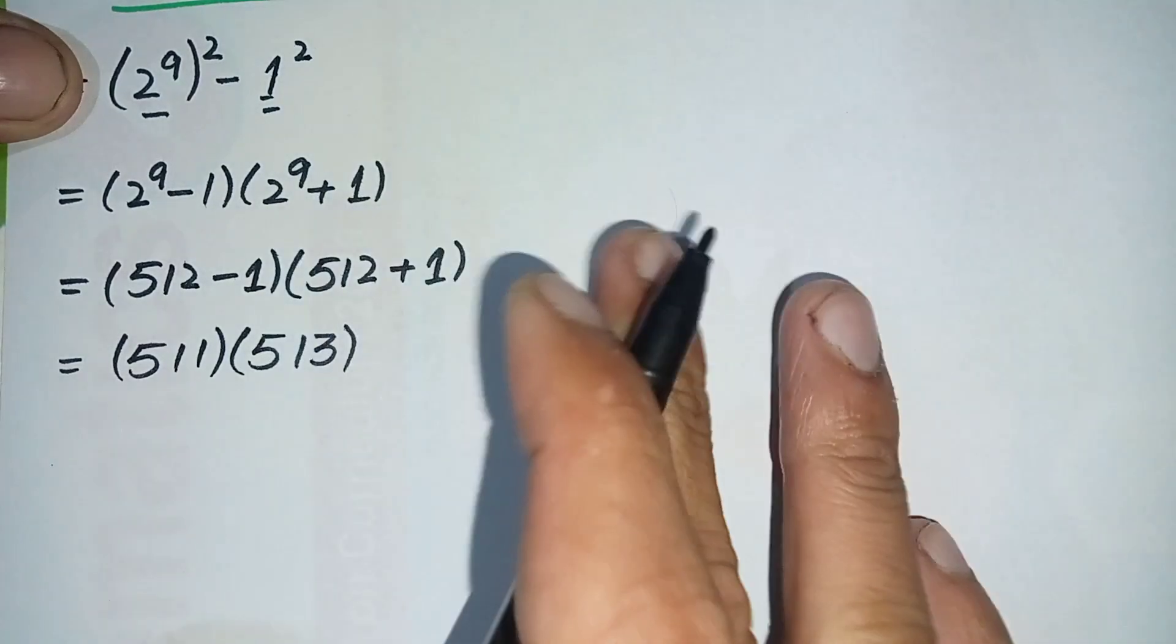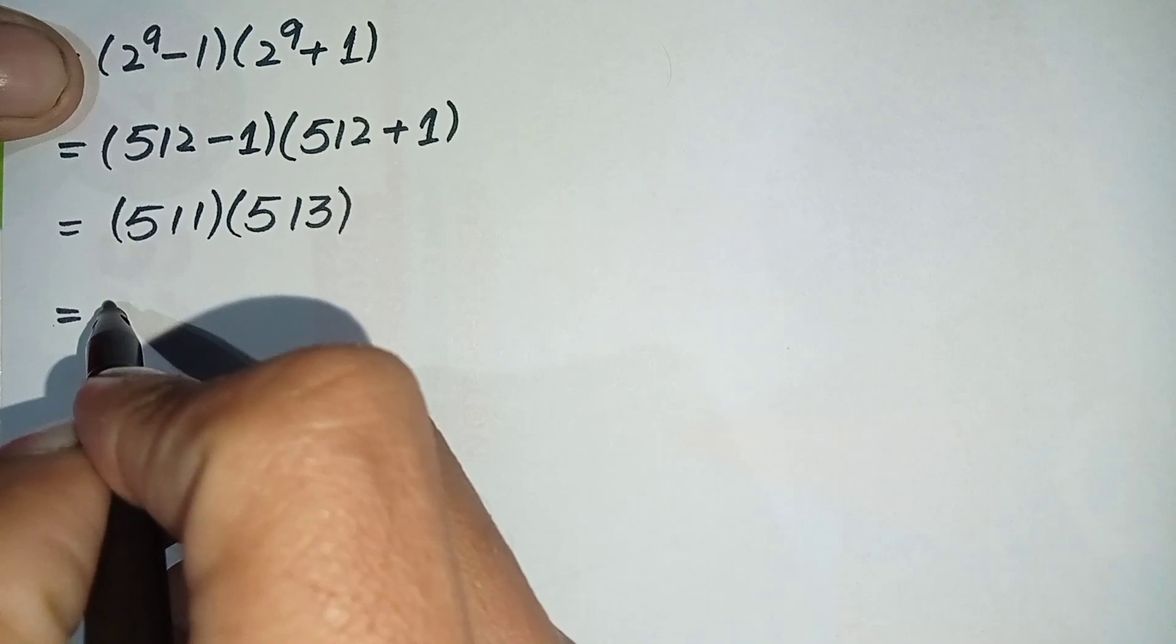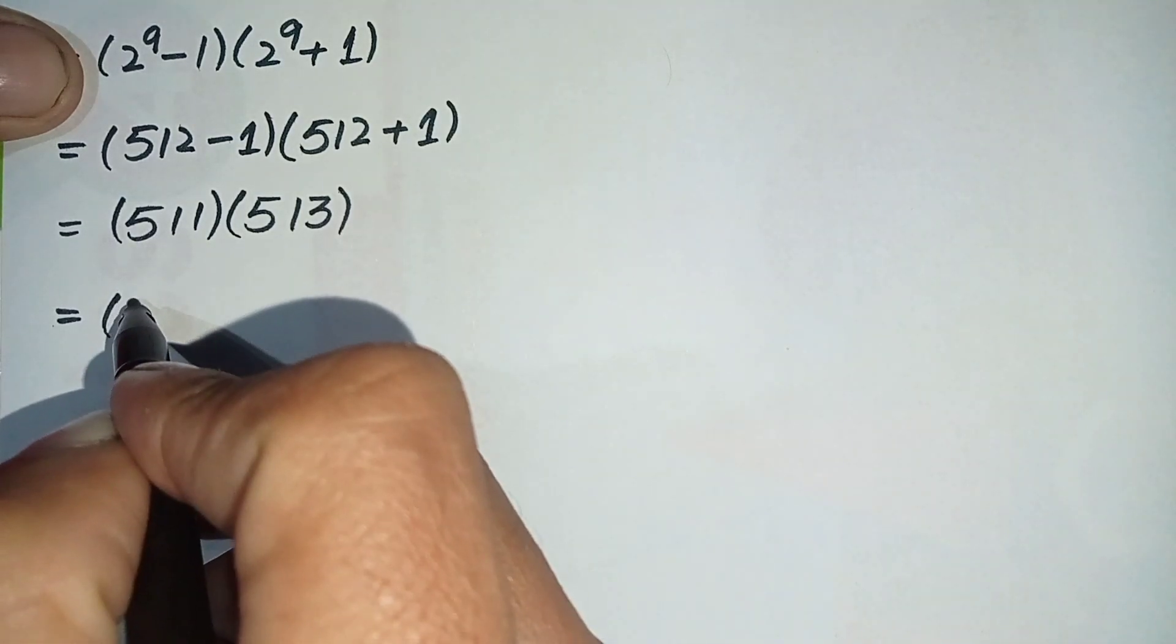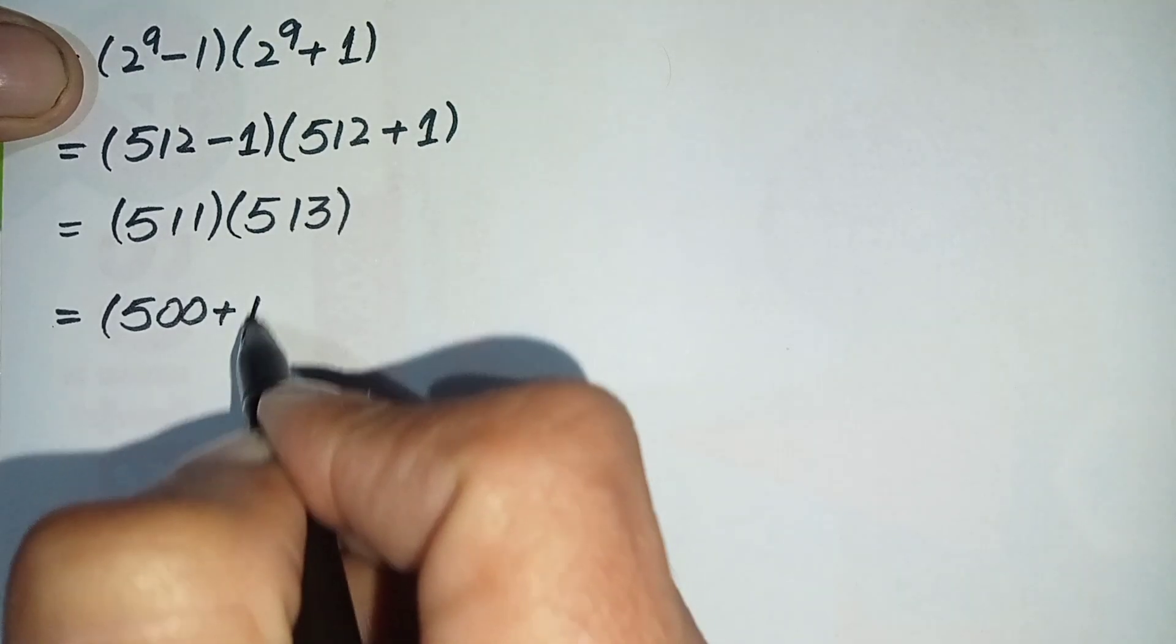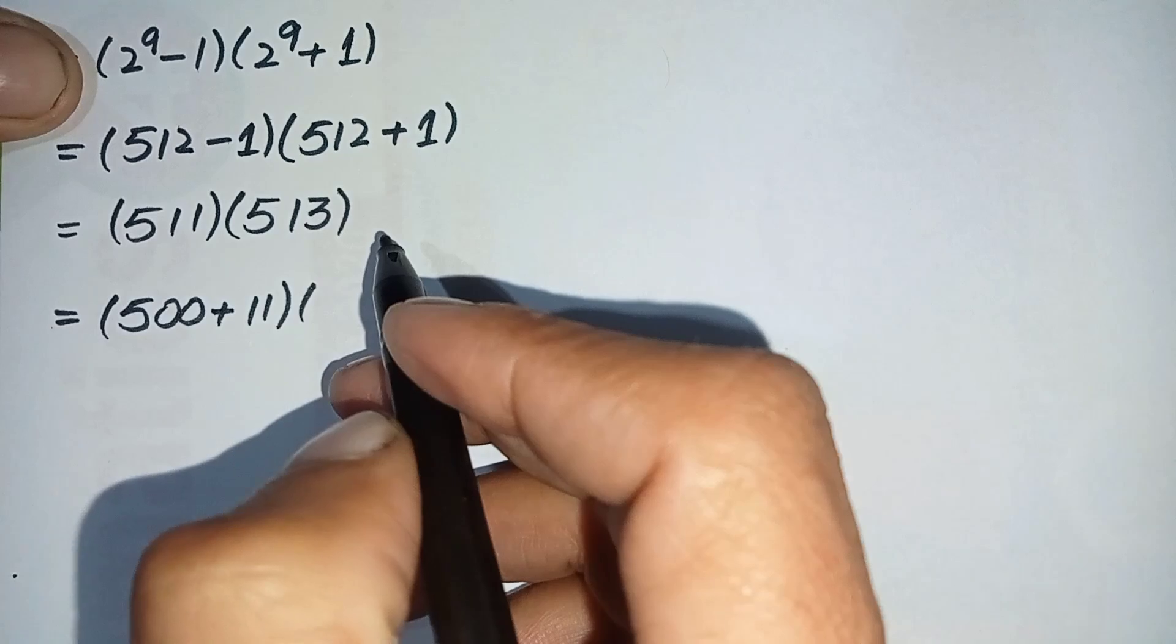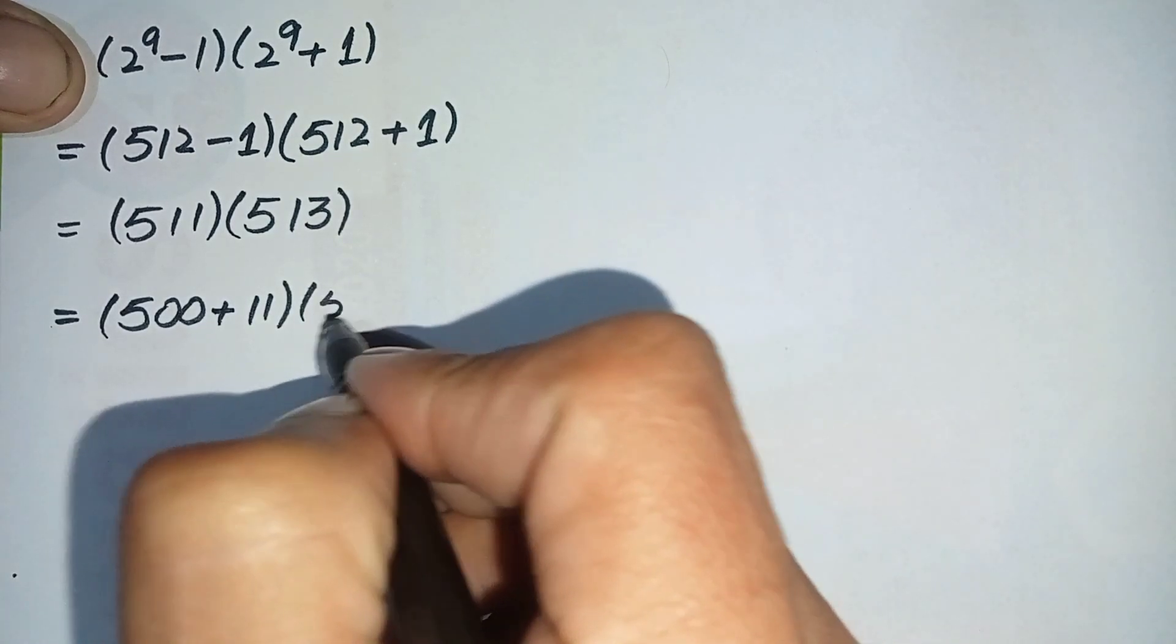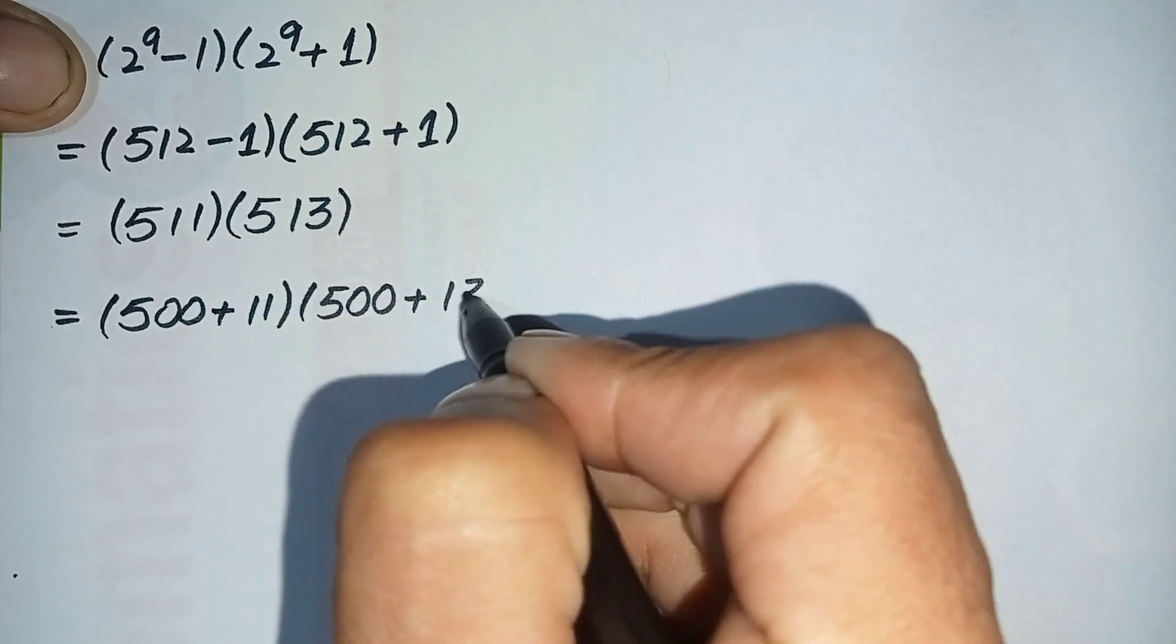Now we can also write these numbers as 511 can be written as 500 plus 11, times 513 which is 500 plus 13.